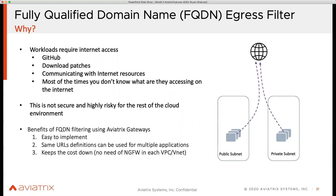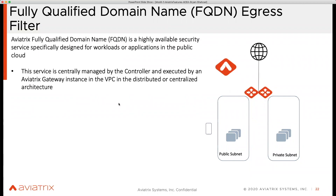So when we provide the solution, we give you the option to create rules or security policies using FQDN. The service is centrally managed — the controller manages this interaction. You come here, you create the profile, you create the rules, and then you push it to the gateways that you want to have internet access with, according to your security posture.